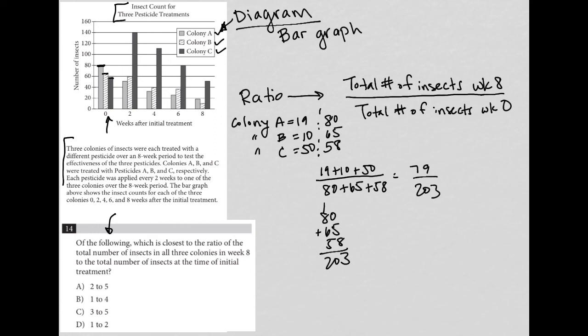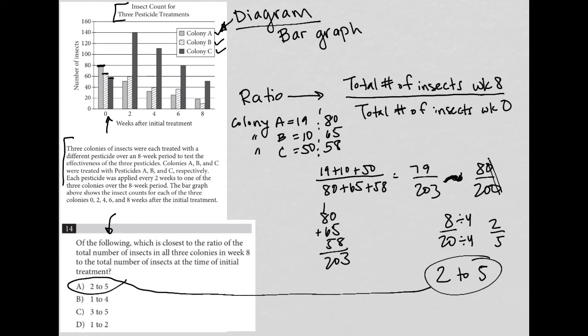Okay, so in essence, because I'm estimating, I'm going to just call this 80 over 200 to make my life easier. And then that makes it 8 over 20. And when I simplify that further, I can divide top and bottom by 4. And I get 2 over 5. And 2 over 5 is the same as 2 to 5. And therefore, the correct answer here is choice A.